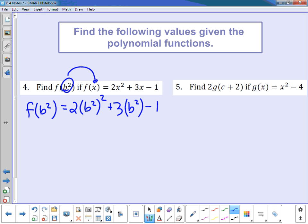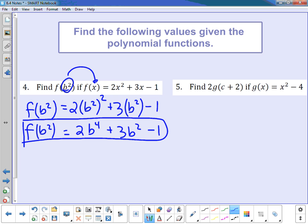So now I want to go through and simplify that as much as I can. If I take a look at b² to the second power, that's 2 times b to the fourth power. And then in the middle, 3 times b² is just 3b². And at the end, subtract 1. I want to check for any like terms. Here I have a b⁴. In the middle, I have b². And then the last one, I have a -1. There are no like terms here. So that's as simplified as it can get. My function at b² is 2b⁴ + 3b² - 1.